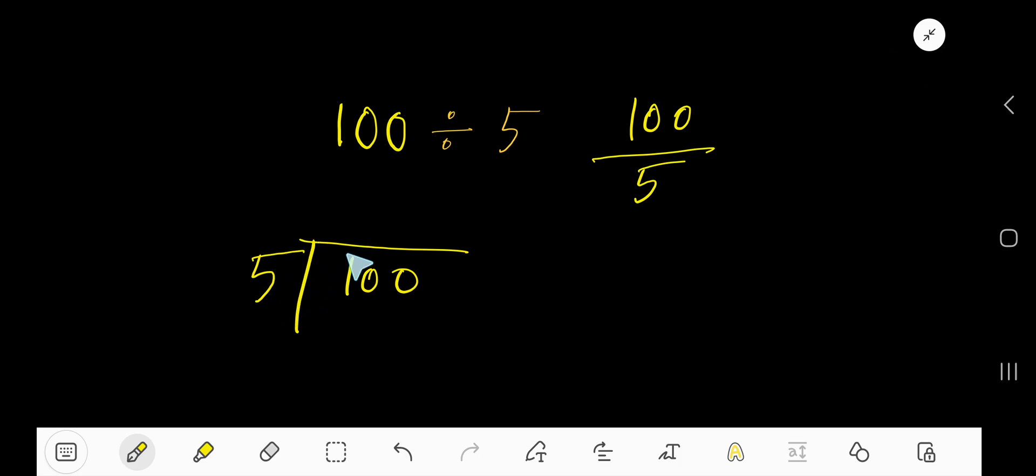Here 5 is a divisor. 5 goes into 1 how many times? Actually, 1 is less than 5, 0 times, right? 5 goes into 1, 0 times. 0 times 5 is 0. If you subtract, then you are getting 1. Bring down this 0.